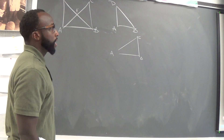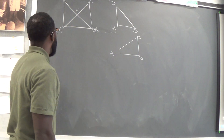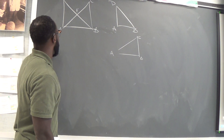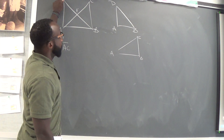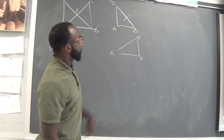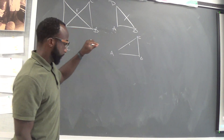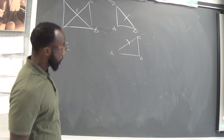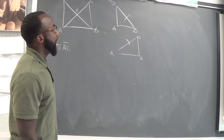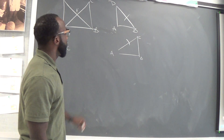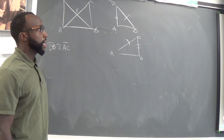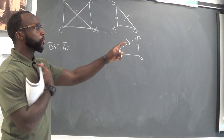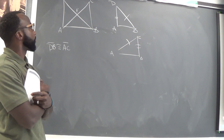The next thing we want to do is look at what's given, and I always say mark what's given. The first given is segment DB is congruent to segment AC. They also said that AD is congruent to BC. Now we have to prove that angle D and angle C are congruent.